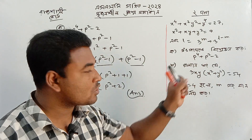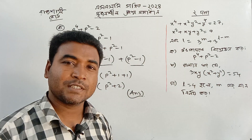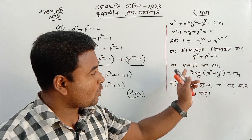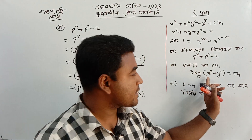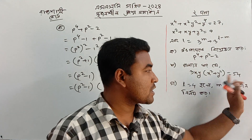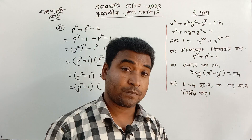Let's go to number 2. We have 3xy into x² plus y² equal to 54.